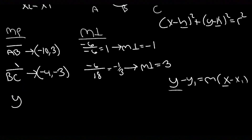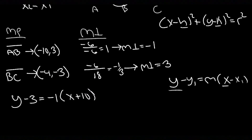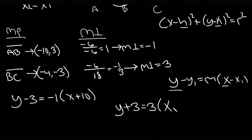For line segment AB, plugging into point-slope form with midpoint (-10, 3) and perpendicular slope -1: y - 3 = -1(x + 10). For line segment BC, using midpoint (-4, -3) and perpendicular slope 3: y + 3 = 3(x + 4).